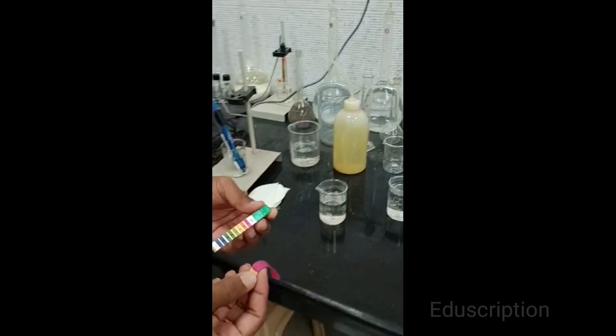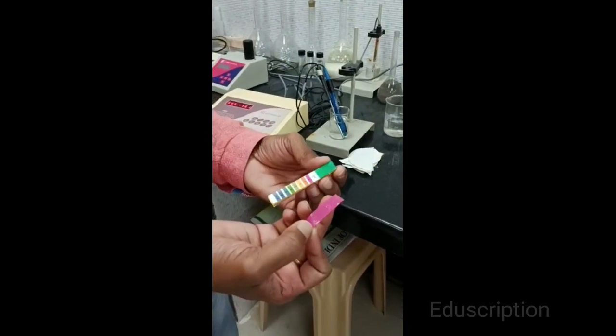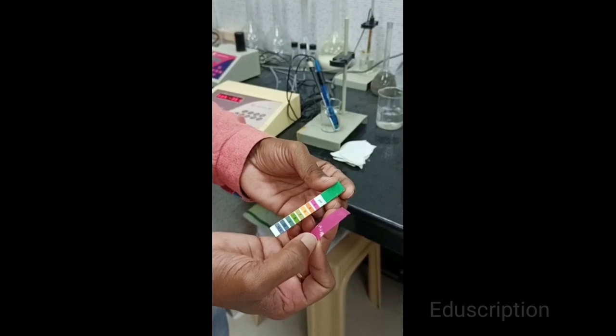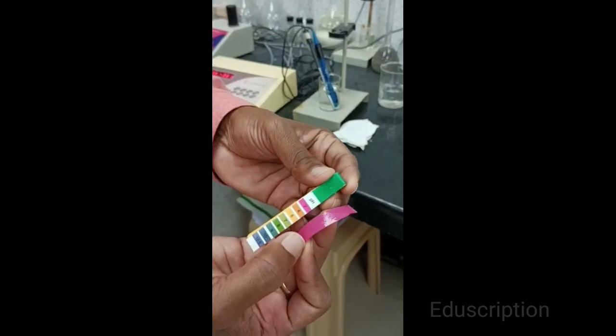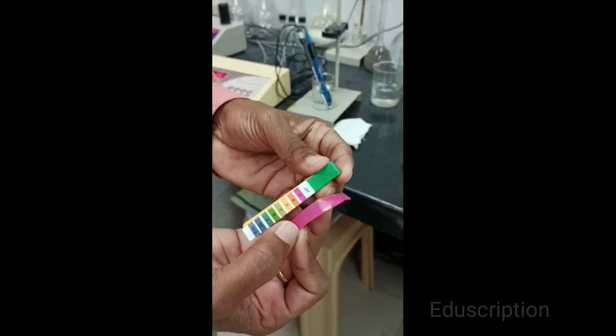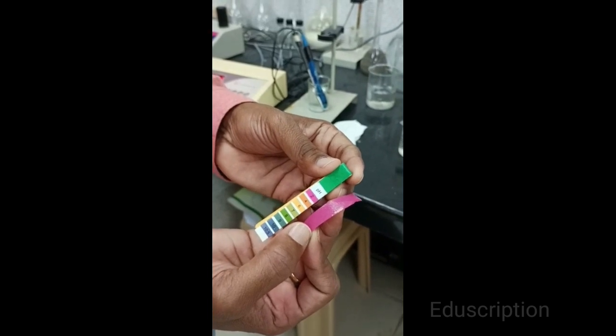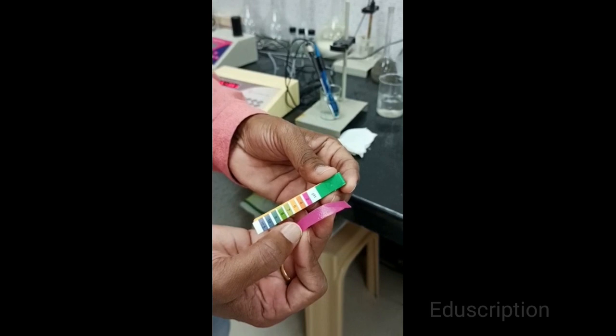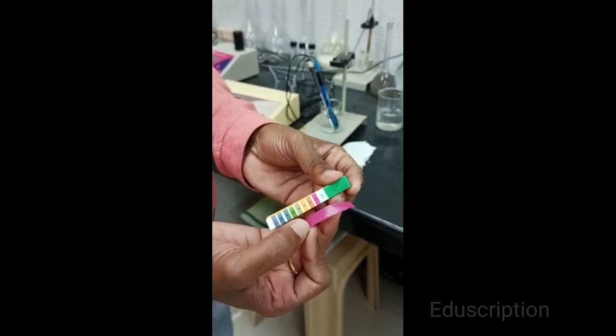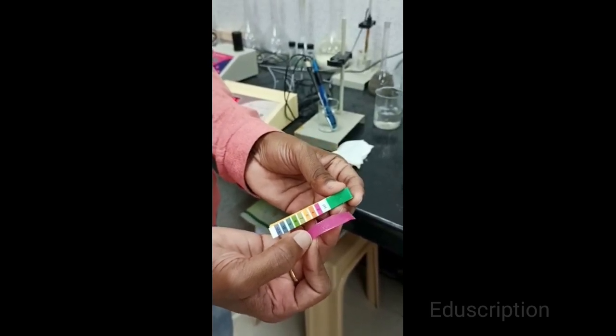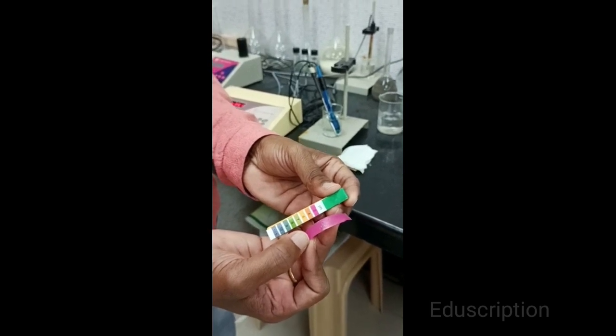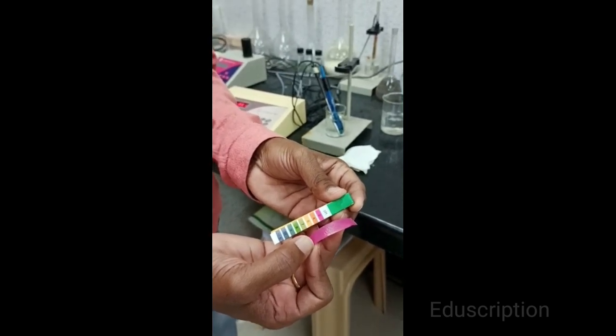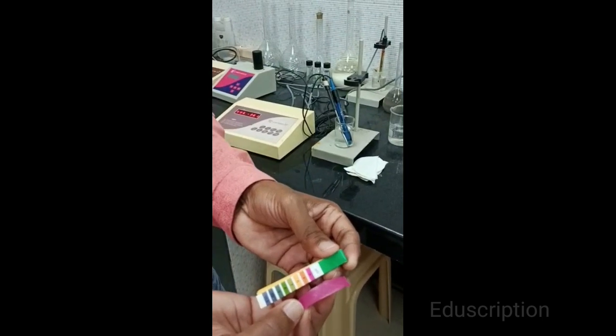Now we insert one pH paper in unknown solution. When you insert this in unknown solution it gives this pink color, so pink color of pH is 2, so it is pH 2. But here we cannot detect the exact pH value.